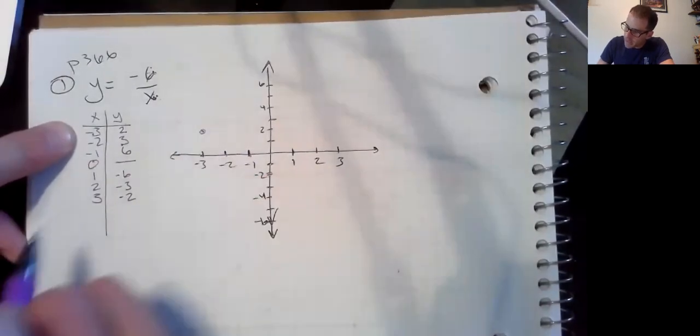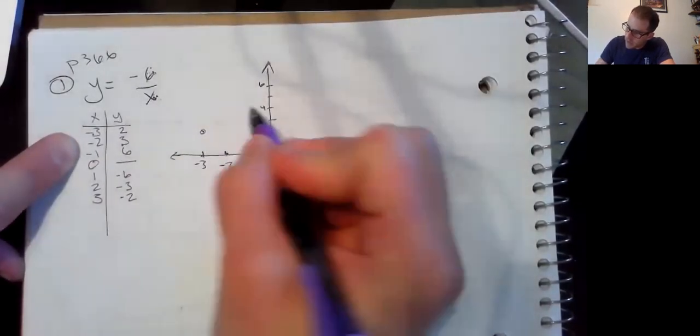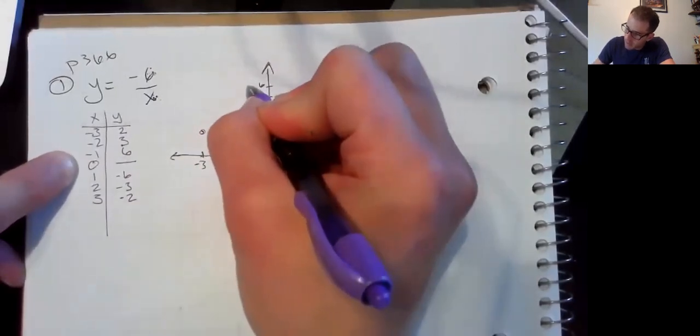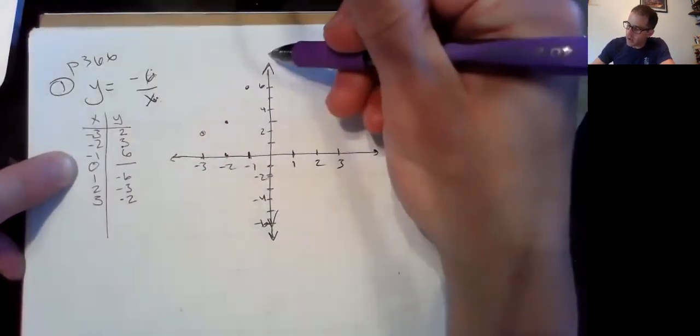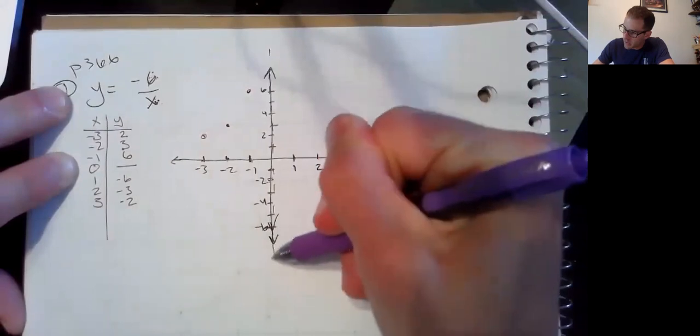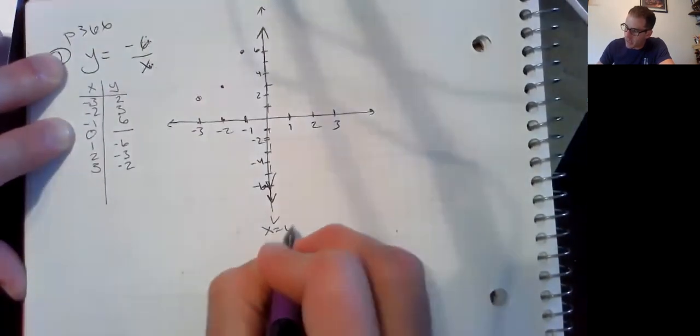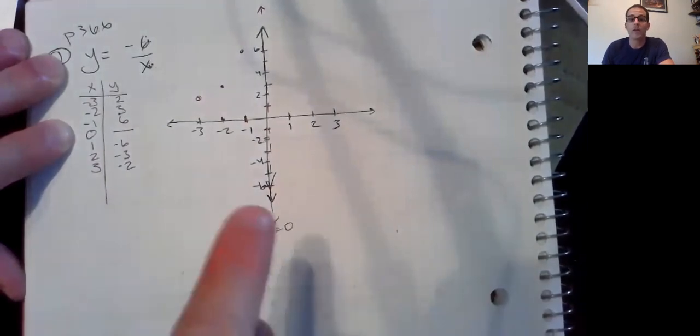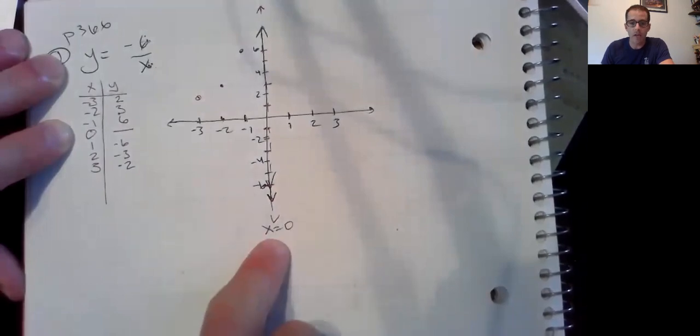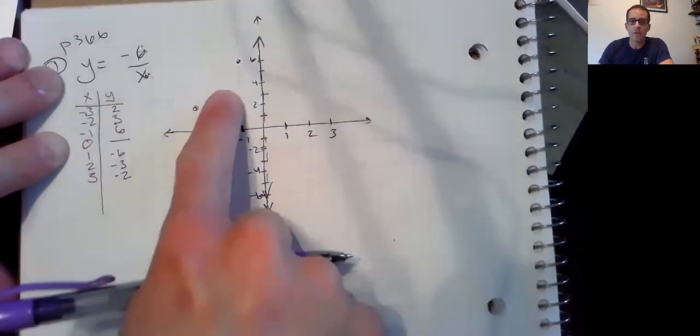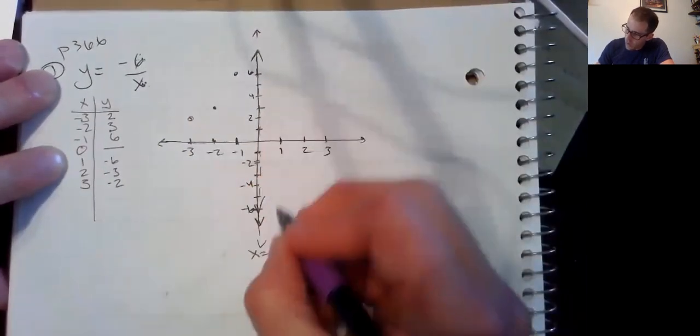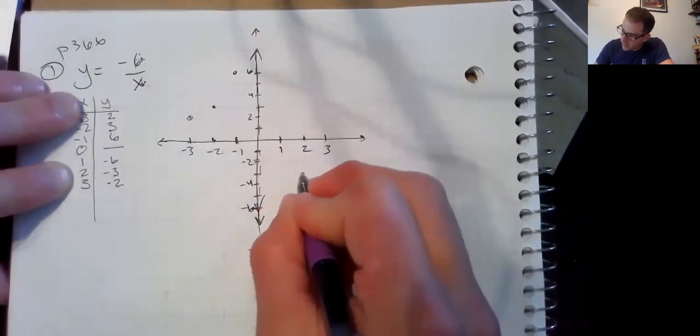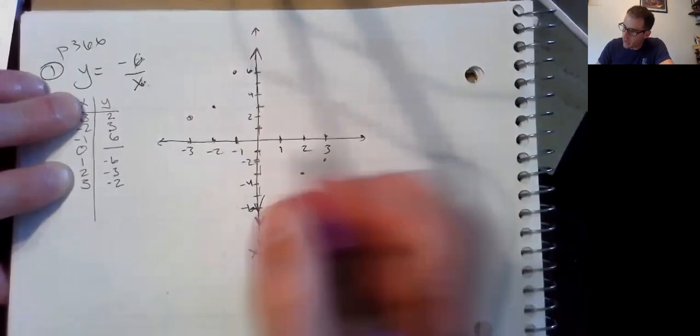Negative three, positive two. Negative two, positive three. Negative one, positive six. My vertical asymptote, zero. So that means dotted line, label x equals zero. You don't have to write the words vertical asymptote, but you do need to write x equals zero, so I know that you know that this is an imaginary line called the asymptote that these won't touch or cross. One, negative six. Two, negative three. Three, negative two.